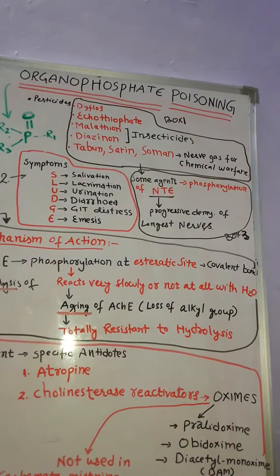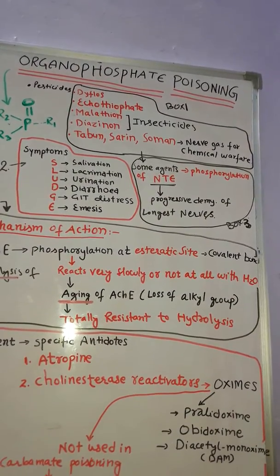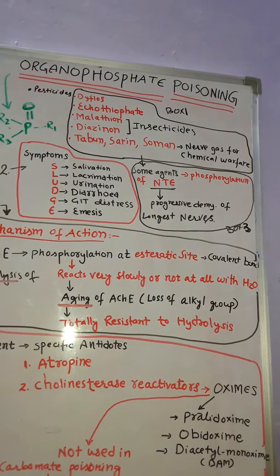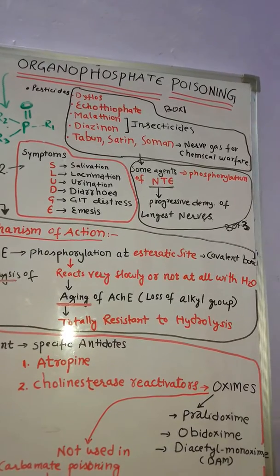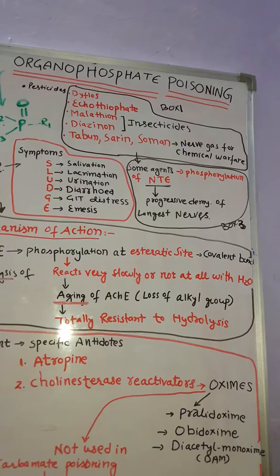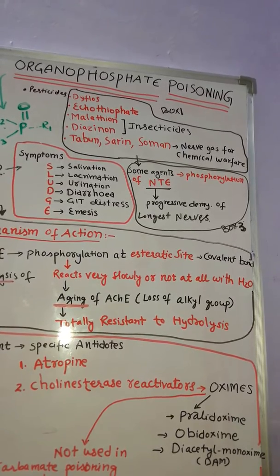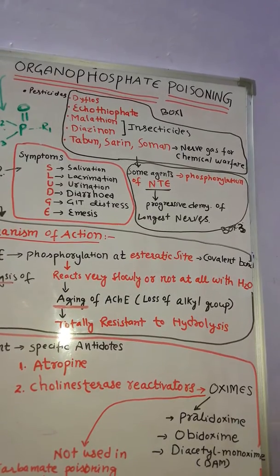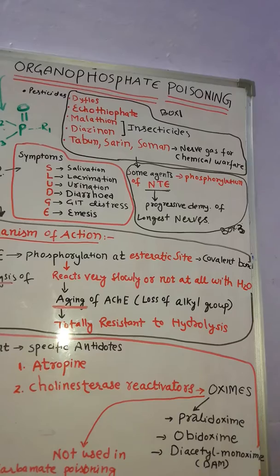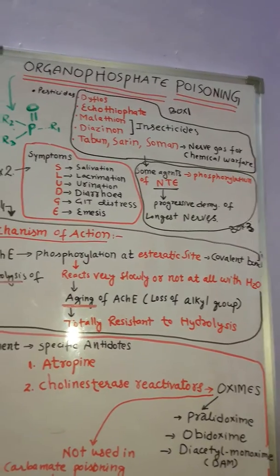Some agents also cause phosphorylation of NTE, an enzyme present in neurons. This leads to progressive demyelination of the longest nerves.